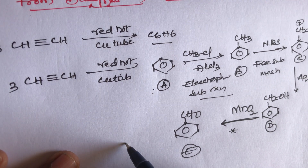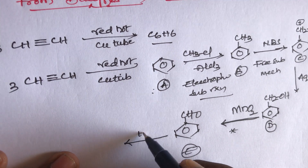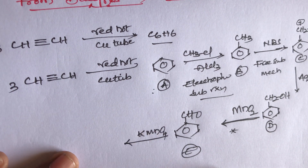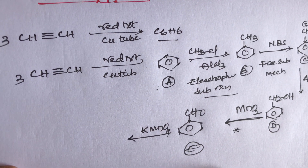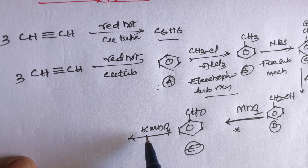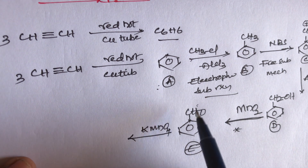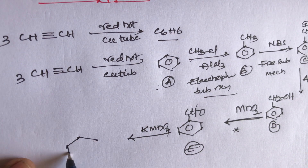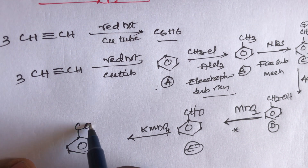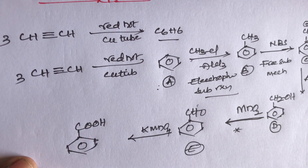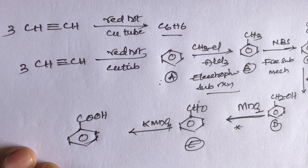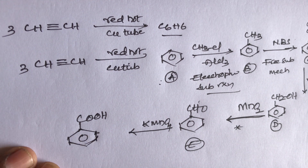This benzyl alcohol undergoes oxidation with KMnO₄ — KMnO₄ acts as a strong oxidizer. It can oxidize the aldehyde group, and this aldehyde group is converted into acid — benzoic acid will be formed. This is a simple conversion.